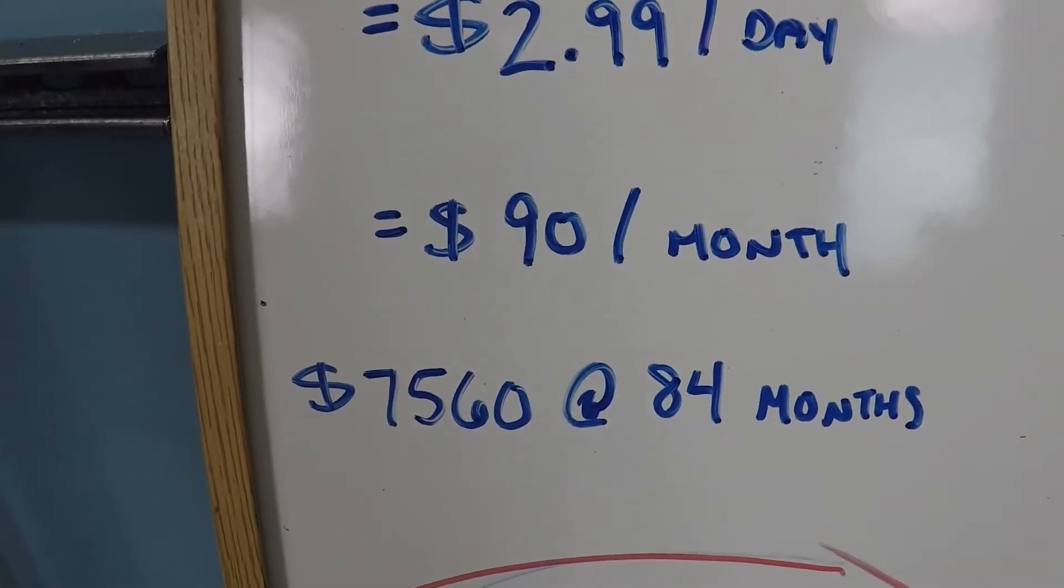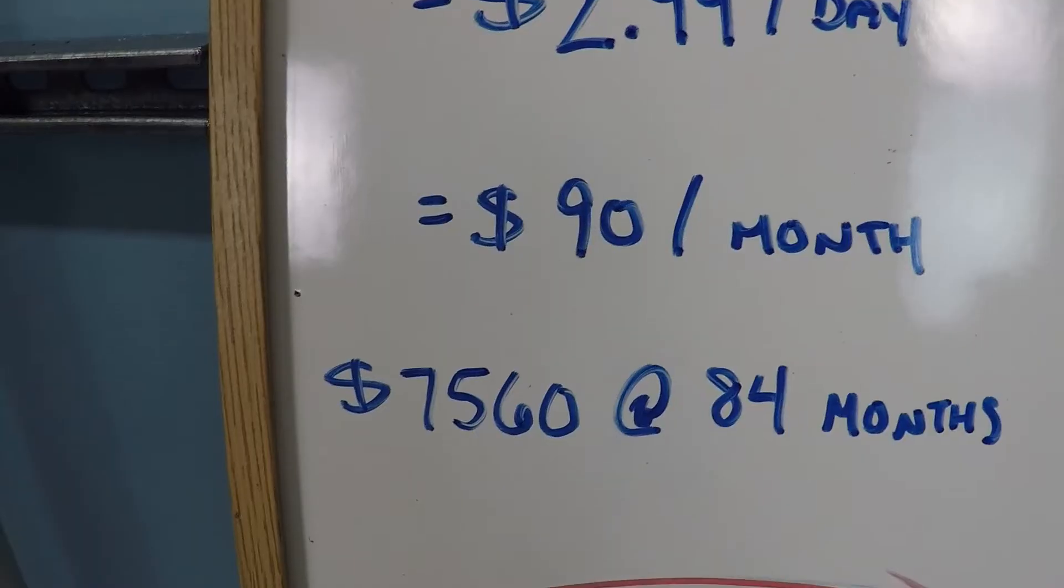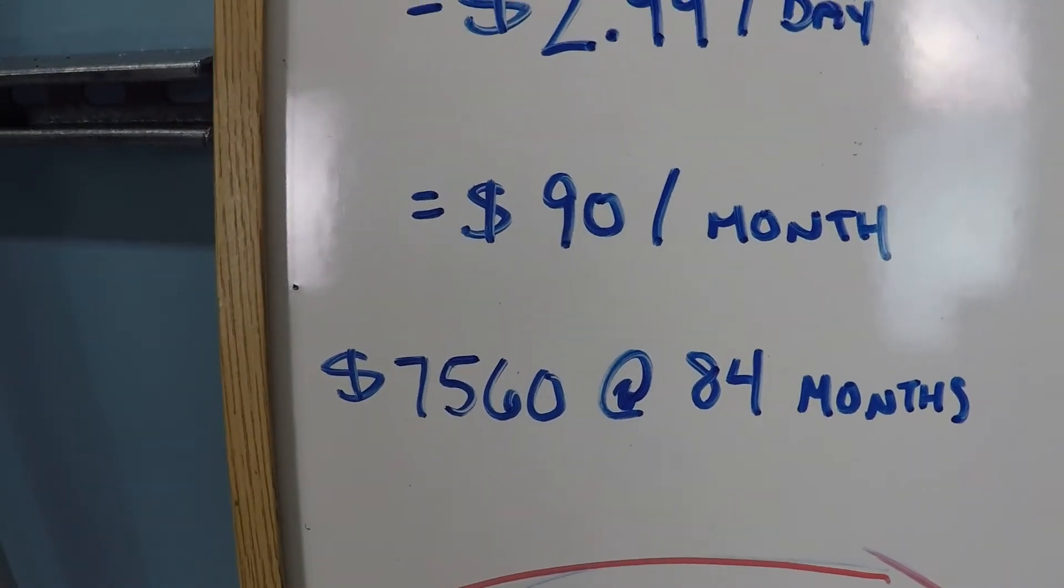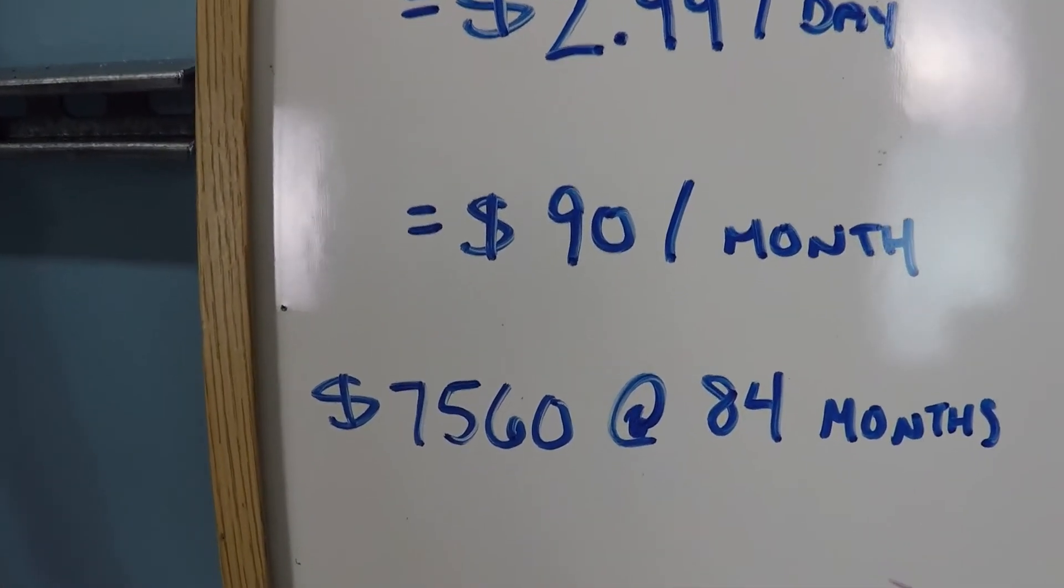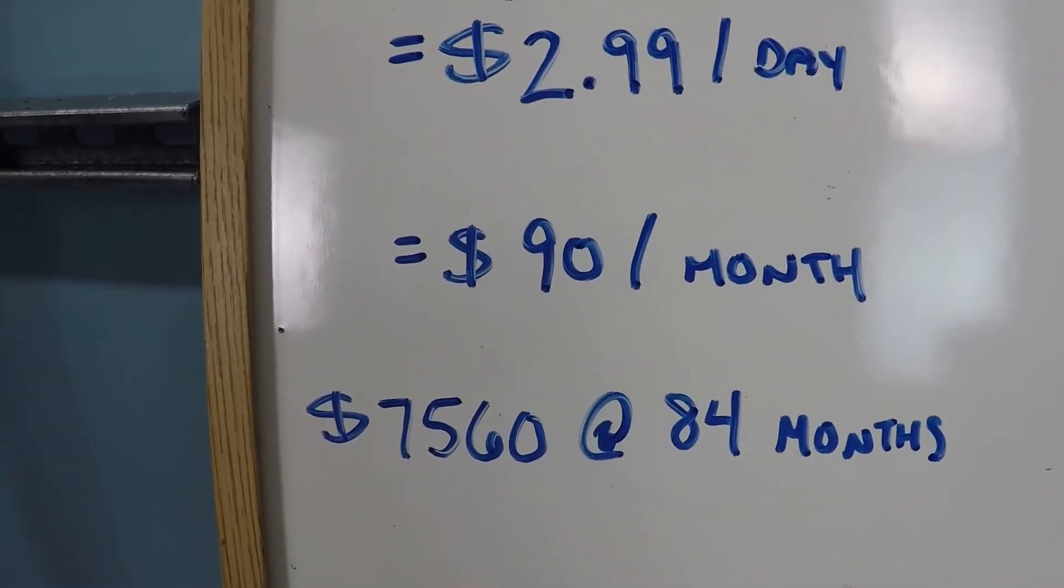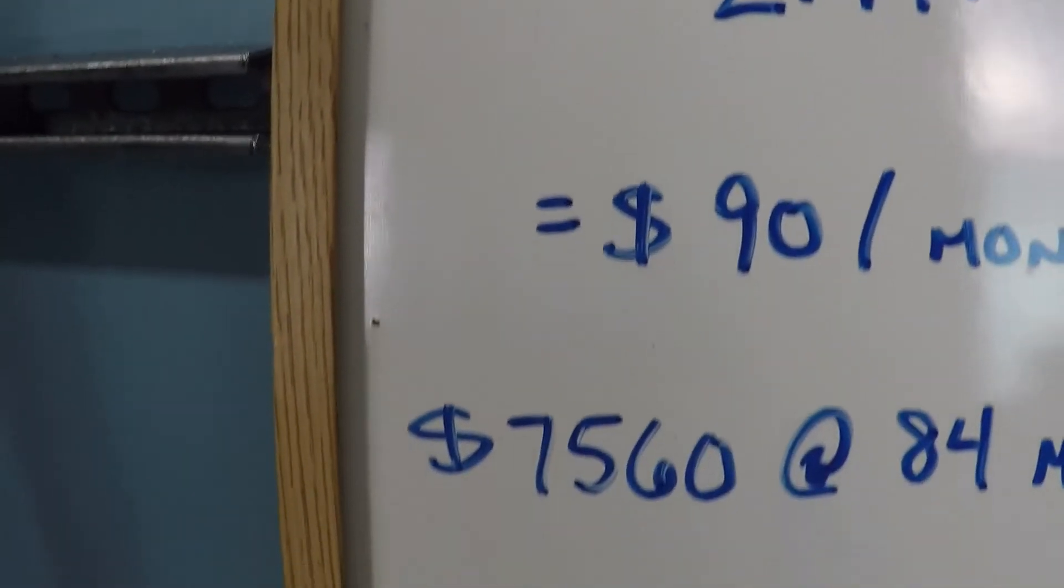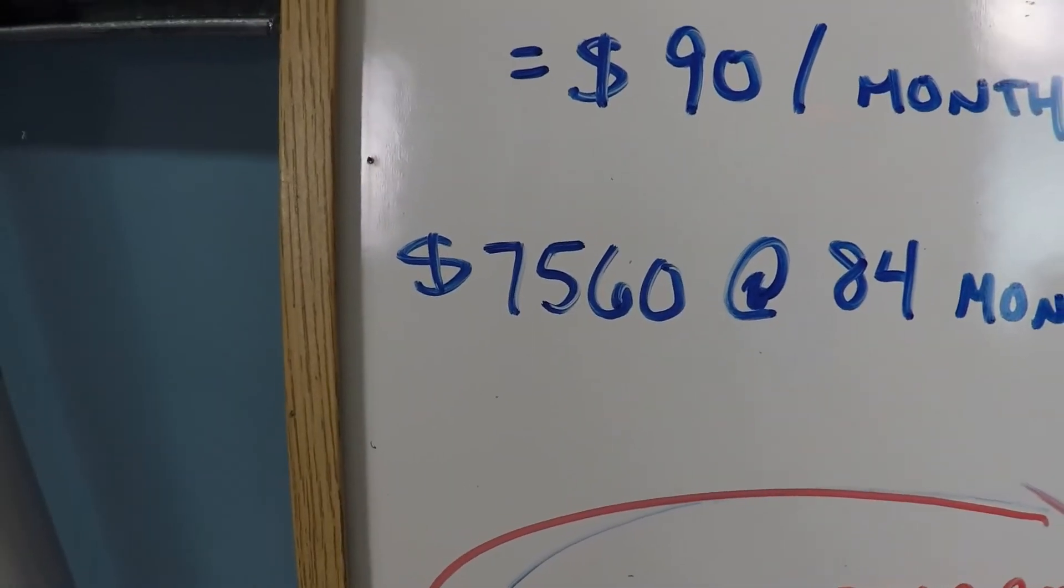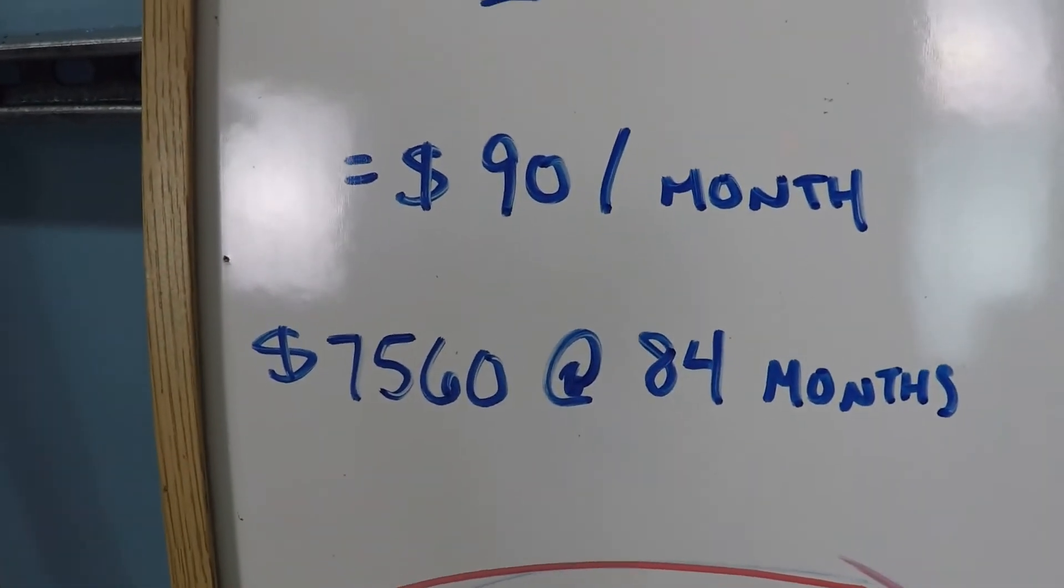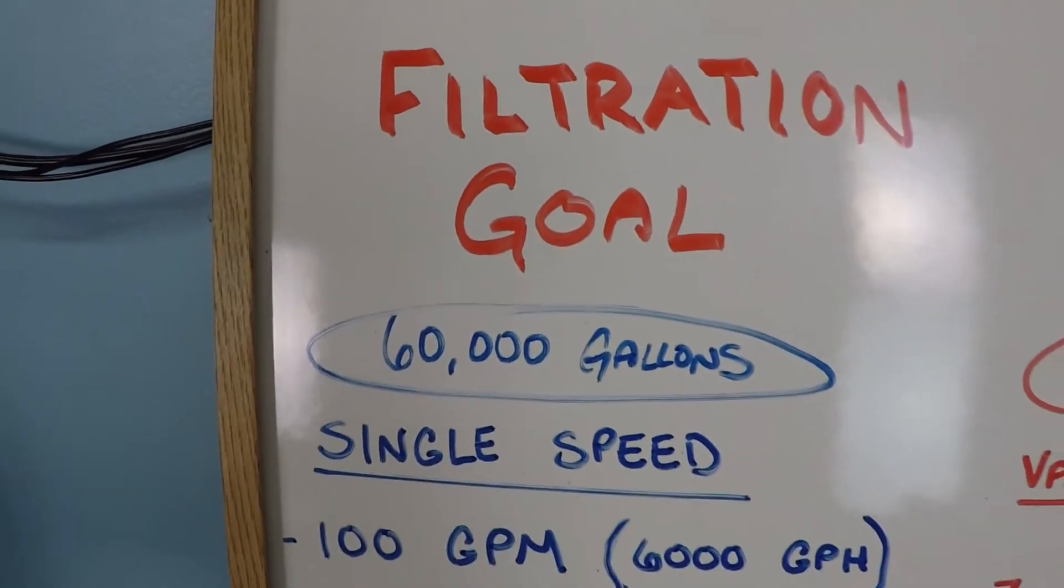Now when you're making comparisons like this for investments that you hope to get a return on, you have to extrapolate over something that might be a reasonable service life for the component that you're looking to buy. And from manufacturers they suggest that 84 months of operation is a reasonable number. And in this case, at $2.99 per day, you would be looking at $7,560 in order to operate this pump for 84 months, filtering 60,000 gallons per day.